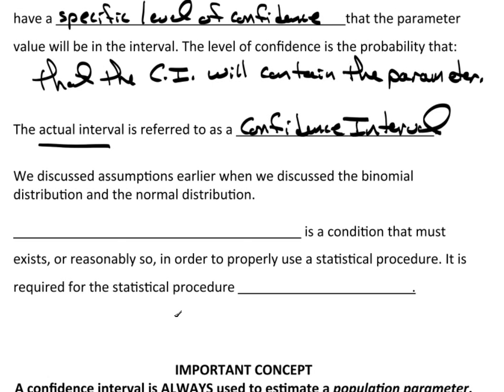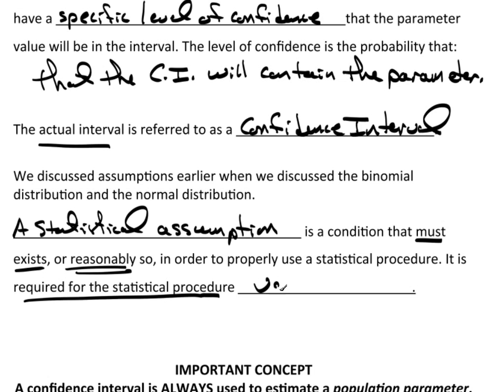As a reminder, a statistical assumption, that means that it's an assumption that we use in statistics for data analysis, is a condition that must exist, or at least reasonably so, in order to properly use a statistical procedure. It's required for the procedure to be valid.